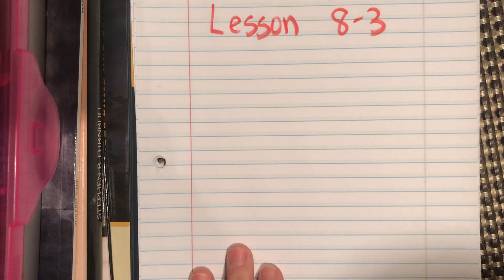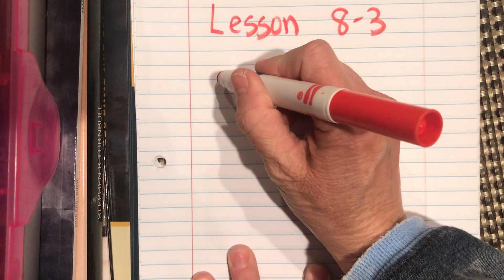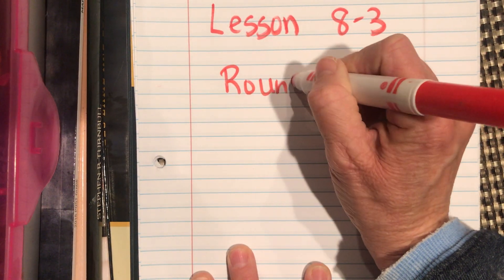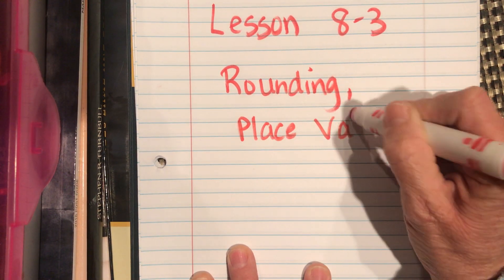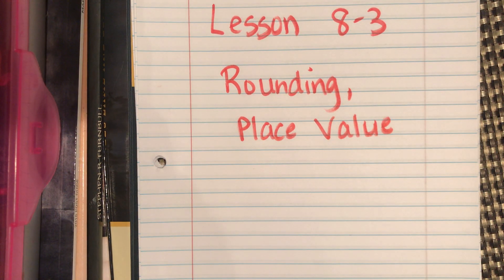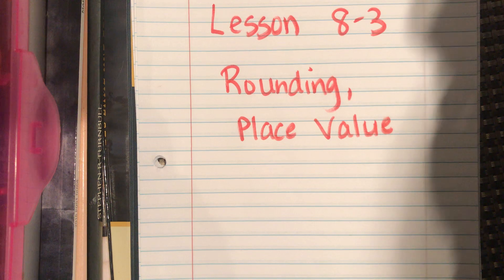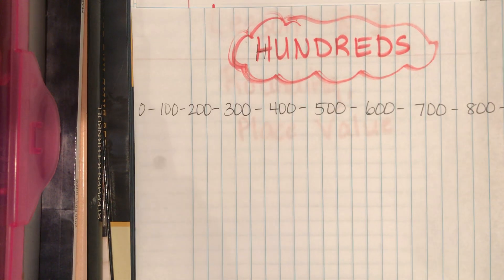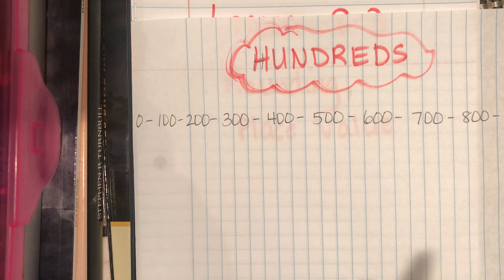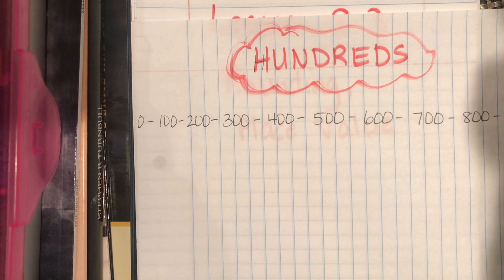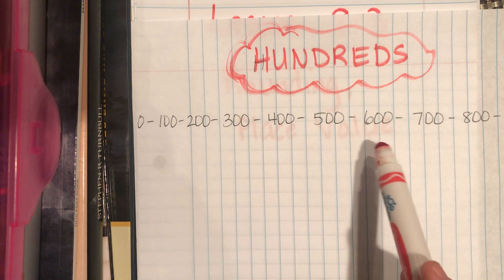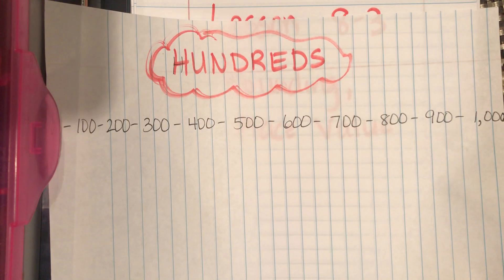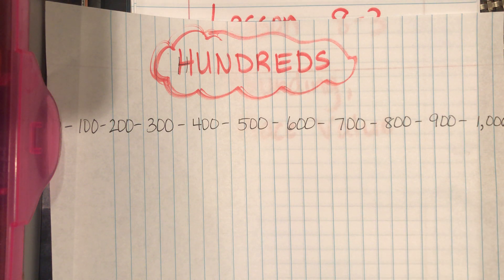Lesson 8-3, we're going to be talking about rounding and place value. When we're looking at rounding, they can tell us to round to the nearest hundreds, in which case our answer is going to be something that ends in 100, 200, 300, 400, 500, 600, 700, 800, 900, or 1000. Those are really our only choices if we're rounding to the nearest hundred.